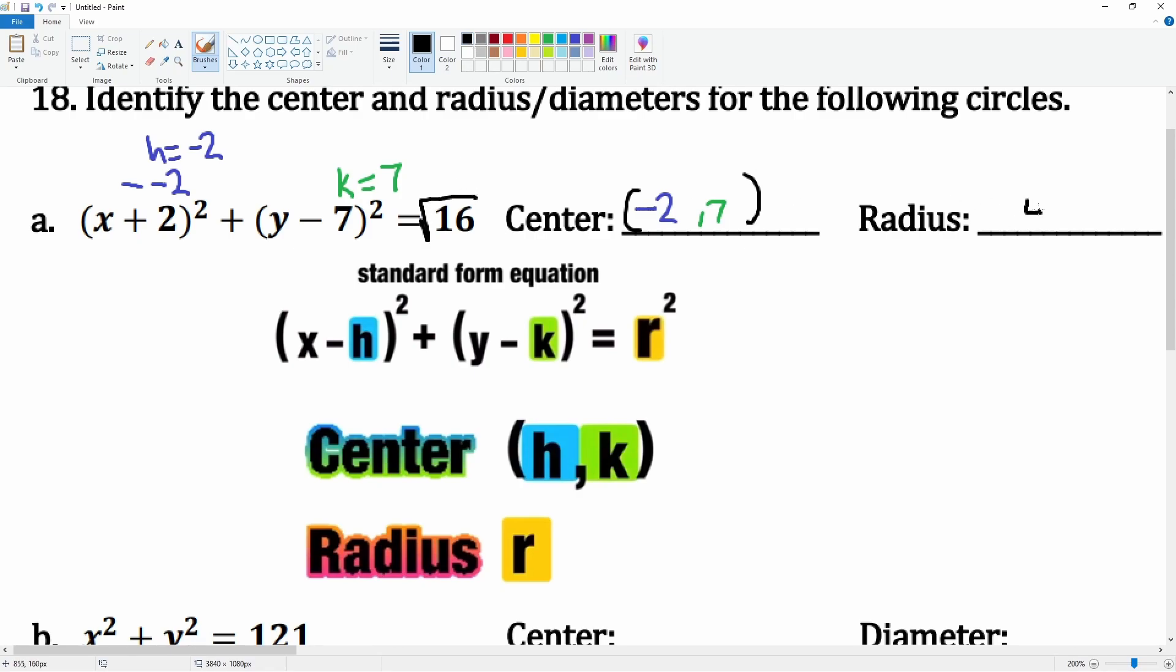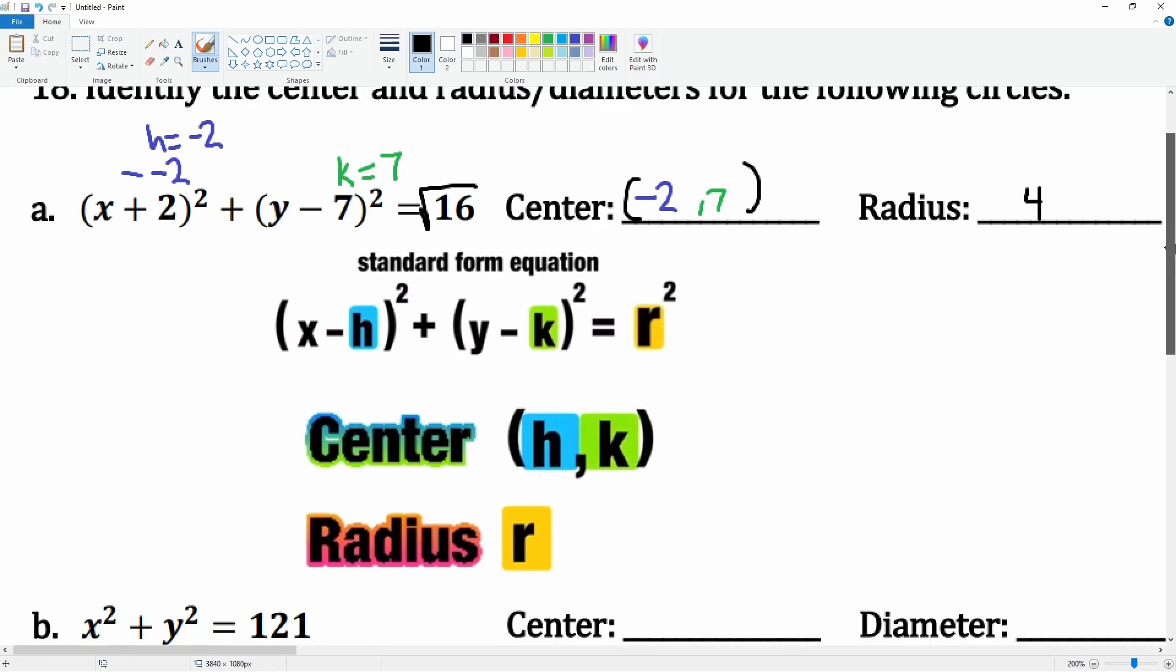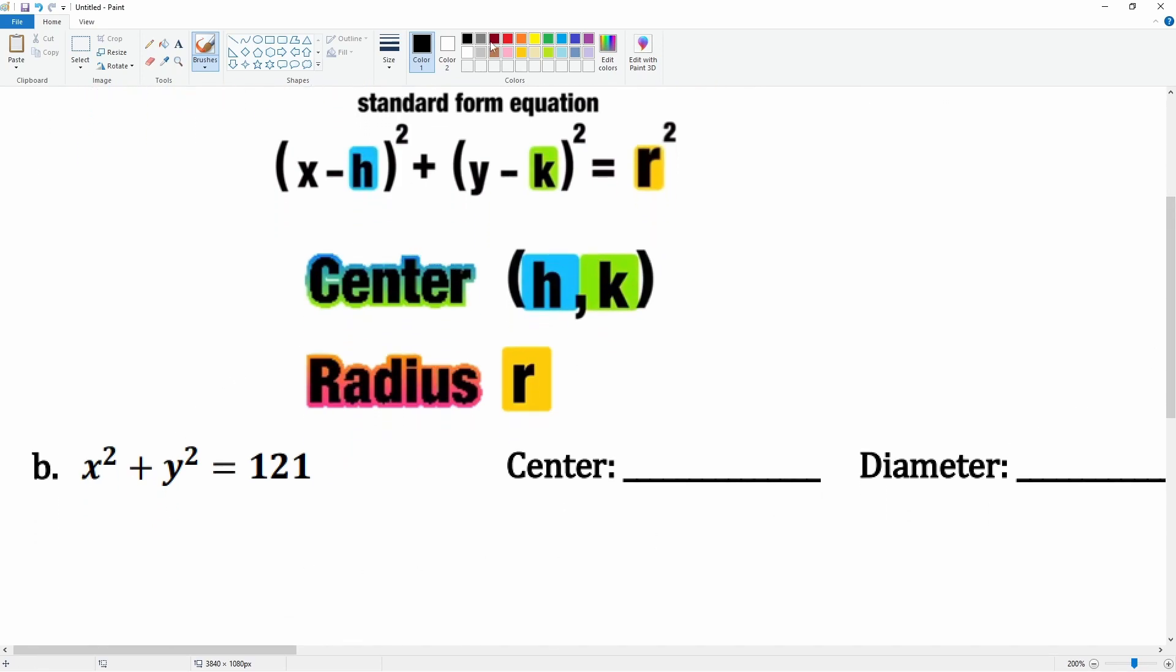And the next one, same thing here, but notice there isn't anything in here. There is technically something there. It's really a minus 0 here, so you can sometimes see it like x minus 0 squared plus y minus 0 squared equals 121, but no one really writes it.